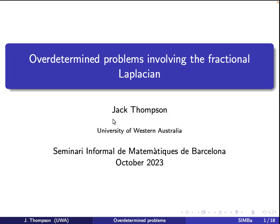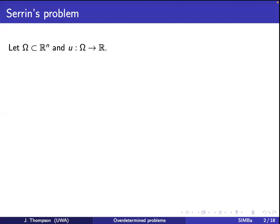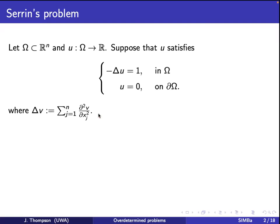I'll begin with an example — it's the most famous example in this area. It's called Serrin's problem, and the idea is we have a domain omega in R^n, a function U from omega to R. We assume that U satisfies constant Laplacian in omega and zero boundary conditions. The Laplacian is the sum of the pure second derivatives.